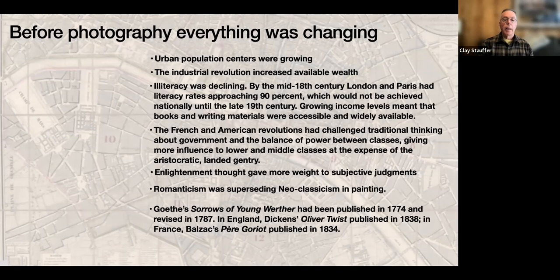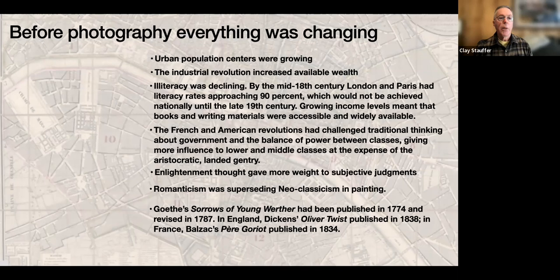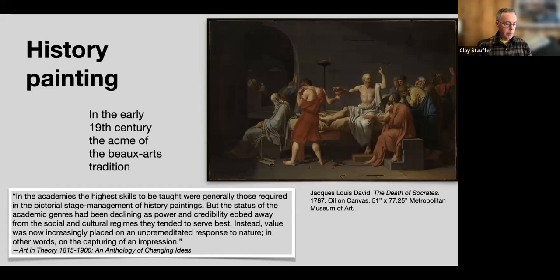In literature, Goethe's Sorrows of Young Werther had been published and revised. In England, Oliver Twist had been published in 1838, and Balzac's work in 1835. You can really see that the world was in ferment — political changes, particularly in France, were pretty tumultuous at the time.